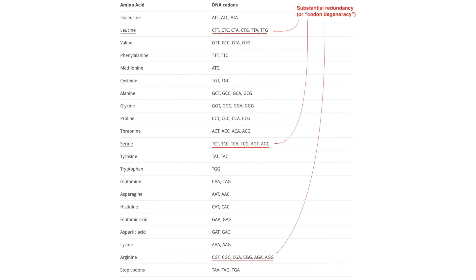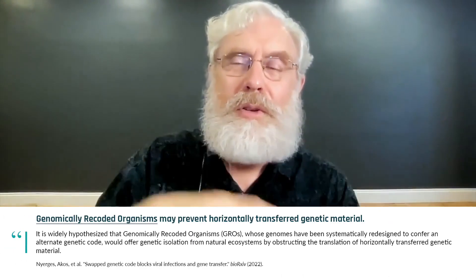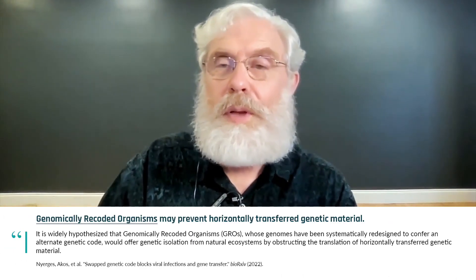They're triplets of A, C, G, and T. For example, AAA codes for the amino acid lysine — there are 64 such codons. If you change one, you get a new genetic code. Change two, and now you get something that's multivirus-resistant. You have to make tens of thousands of changes genome-wide, interspersed throughout the genome, so you might as well just synthesize it — and that's what was done.